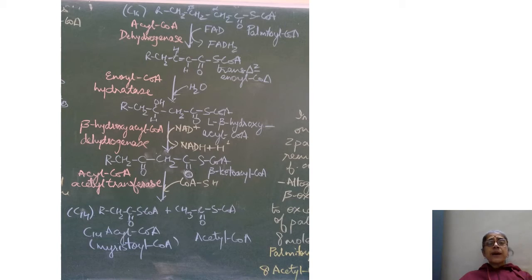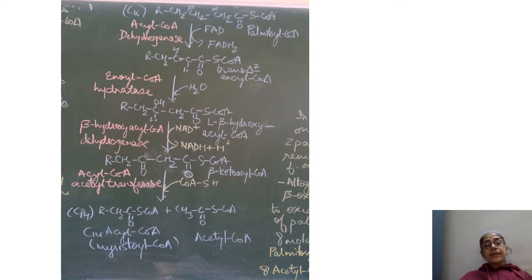In the third step, beta-hydroxyacyl-CoA dehydrogenase acts on L-beta-hydroxyacyl-CoA and removes reducing equivalents from the beta carbon atom. NAD+ acts as the acceptor and gets converted into NADH + H+, and the product formed is beta-ketoacyl-CoA. In the last step, catalyzed by thiolase (acyl-CoA acetyltransferase), a two-carbon fragment — acetyl-CoA — is removed from beta-ketoacyl-CoA to form a shorter chain fatty acid, myristoyl-CoA, plus acetyl-CoA.